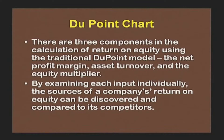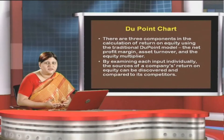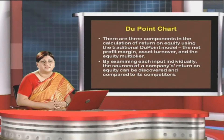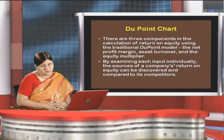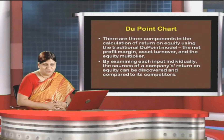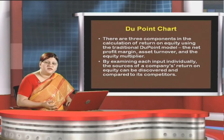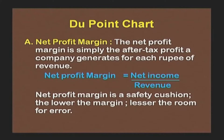By examining each input individually, the source of a company's return on equity can be discovered and compared to its competitors. Under the traditional DuPont analysis, return on equity is computed where three basic premises are used: the net profit margin, asset turnover, and the equity multiplier. Why they are being used, what is their significance, and how they are being used — let us learn about them.